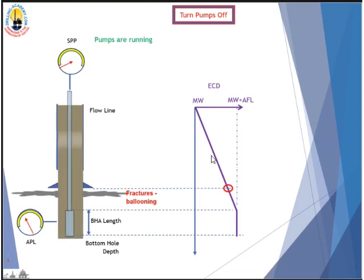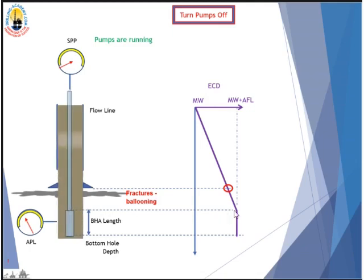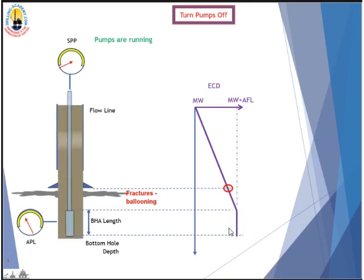ECD is increased all the way along the wellbore up to the top of the BHA. Generally, this is the highest part of ECD in the wellbore — along the BHA.